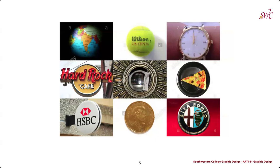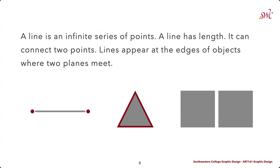We can see how points find their way into a lot of different aspects of our lives. A line is an infinite series of points — when you put a lot of points together, that creates a line. A line has some sort of length, whether short or long, and it can connect two points together. Lines can also appear around the edges of objects; this is what we refer to as a stroke in Adobe Illustrator.